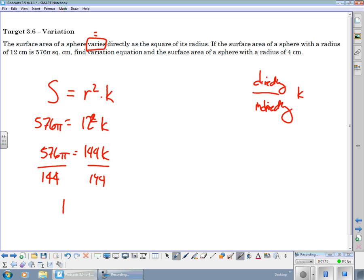So k is going to equal 4 pi. So then, you're going to write, and you need to write this down, because let's find the variation equation in the surface area. So your variation equation in your surface area is equal to r squared. So this is r squared. So 4 pi, and then r squared.